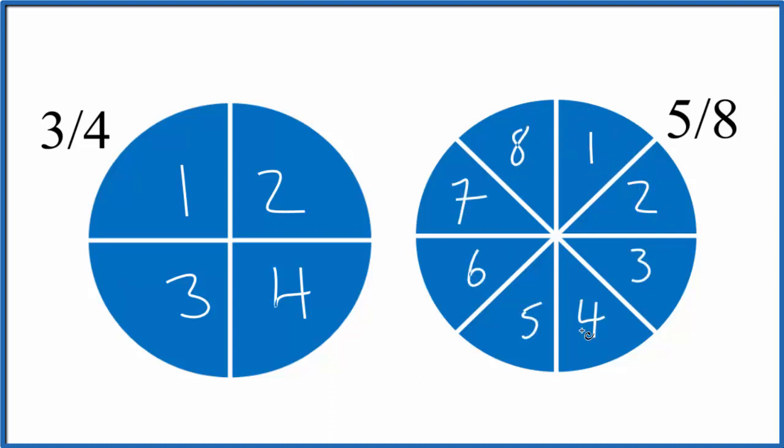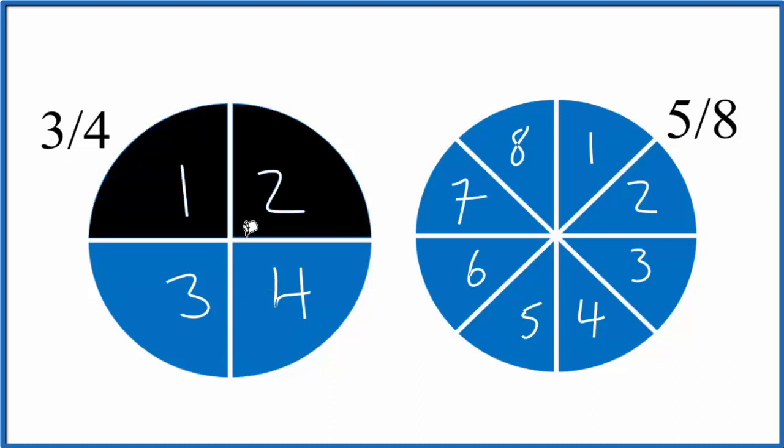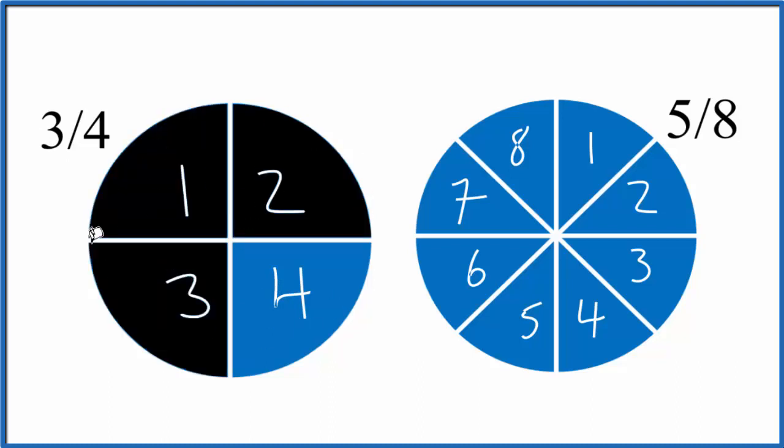That would be five of these pieces. So let's shade in three of the four pieces, the part of the whole. So 1, 2, 3, that's 3 fourths of this circle.